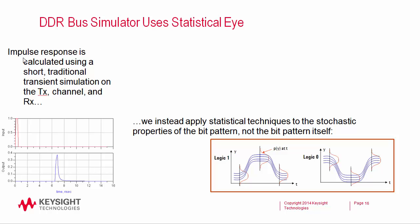The idea is we take an impulse response using a very short traditional SPICE simulation, using our transient simulator on the transmitter, the channel, and the receiver. Instead of running a bit pattern through this impulse response, we instead apply the stochastic properties of a conceptually infinite non-repeating bit pattern. We don't need to run 10 to the 16 bits through this simulation — we can just calculate the eye diagram using statistical techniques adapted from SERDEs.